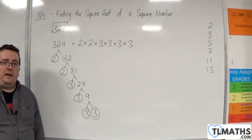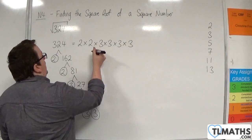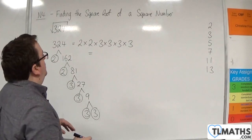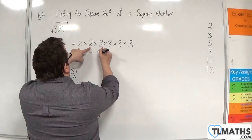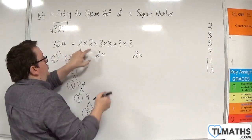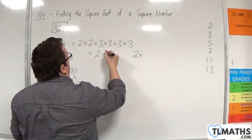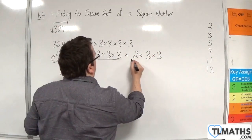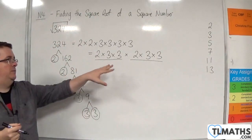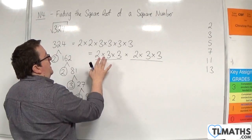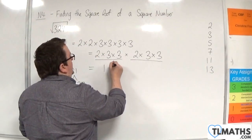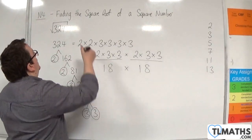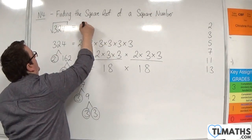How does that help me find the square root? Essentially I'm going to rewrite this and share it into two halves. I've got two 2's, so I'm going to have a 2 in each half. Then I've got four 3's, so each half gets two of them. So we've got 2 times 3 times 3 and 2 times 3 times 3. Now 2 times 3 times 3 is 18, so this is 18 times 18 — 324 is 18 squared. So the square root of 324 is 18.